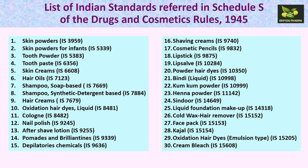The 30 finished cosmetic products included in Schedule S of the Drugs and Cosmetics Rules 1945 are: skin powders, skin powders for infants, tooth powder, toothpaste, skin creams, hair oils, shampoos, soap-based and synthetic detergent-based hair creams, hair dyes (liquid and oxidation types), cologne, nail polish, aftershave lotion, brilliantines, depilatories, shaving creams, cosmetic pencils, lipsticks, lip salves, powder hair dyes, bindi liquid, kumkum powder, henna powder, sindoor, liquid foundation makeup, cold wax hair remover, face pack, kajal, oxidation hair dyes, and cream bleach. Each product has associated BIS specifications listed in brackets.